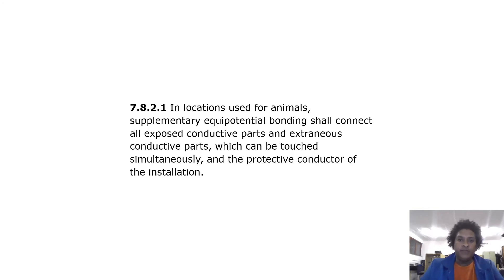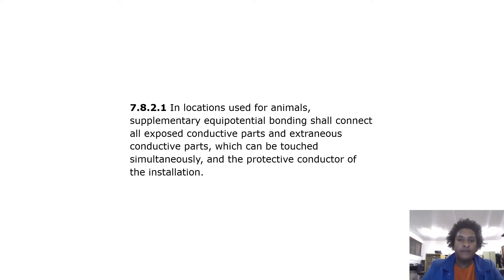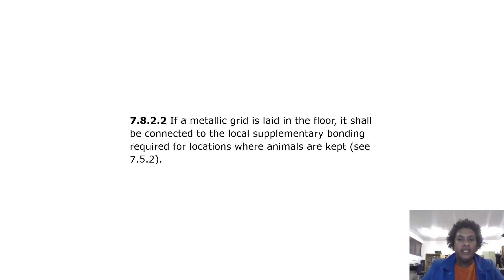Supplementary Equipotential Bonding: in locations used for animals, supplementary equipotential bonding shall connect all exposed conductive parts and extraneous conductive parts which can be touched simultaneously, and the protective conductor of the installation. If a metallic grid is laid on the floor, it shall be connected to the local supplementary bonding required for locations where animals are kept.